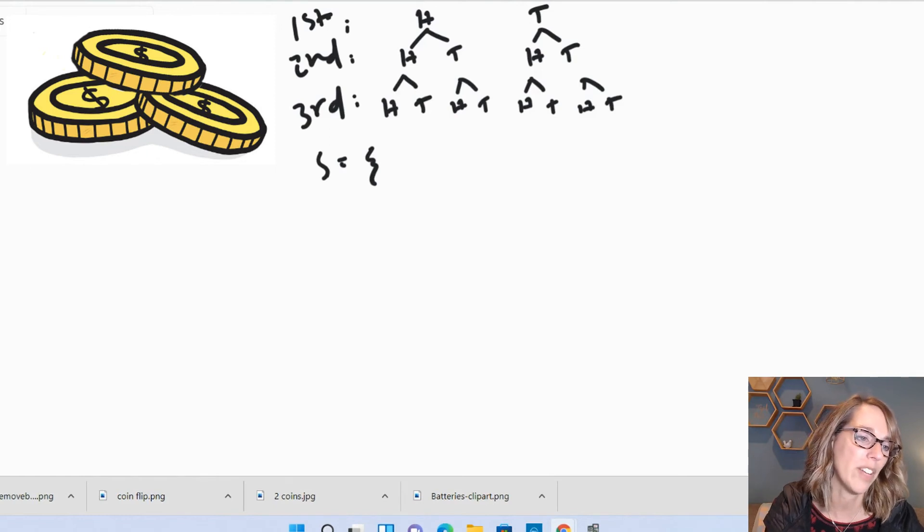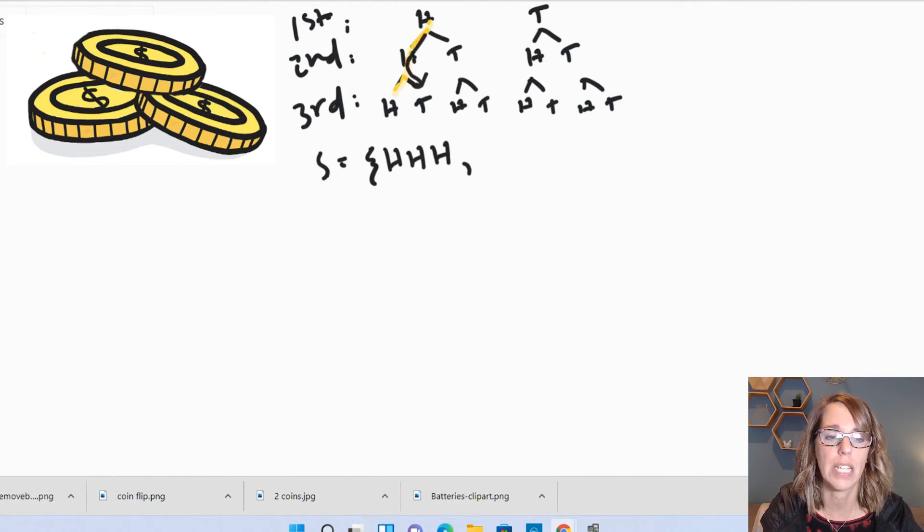With this first branching here, this first branching would be H, H, H. And I can follow these down. And then the second branching would be H, H, T. I'm not going to write all these. Don't worry. And then H, T, H. Order does matter here. H, T, H. And so on.